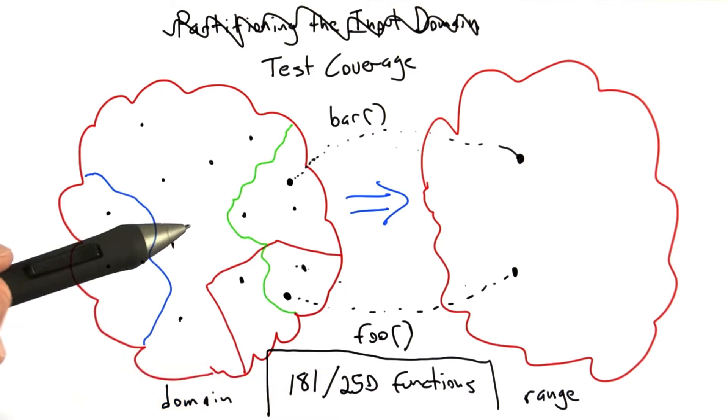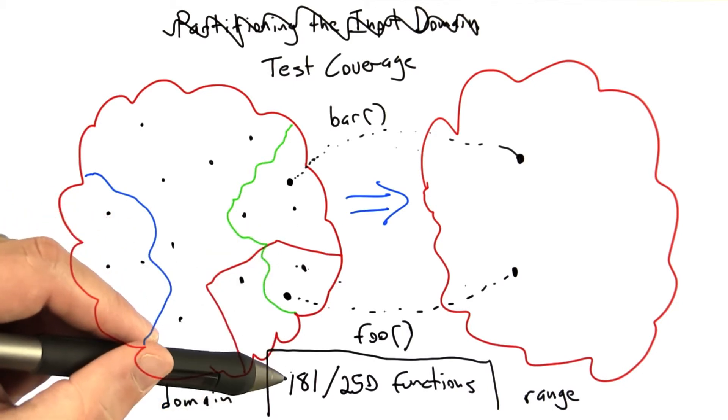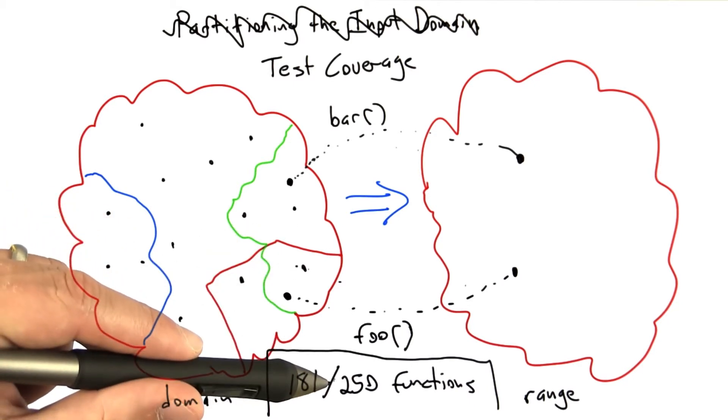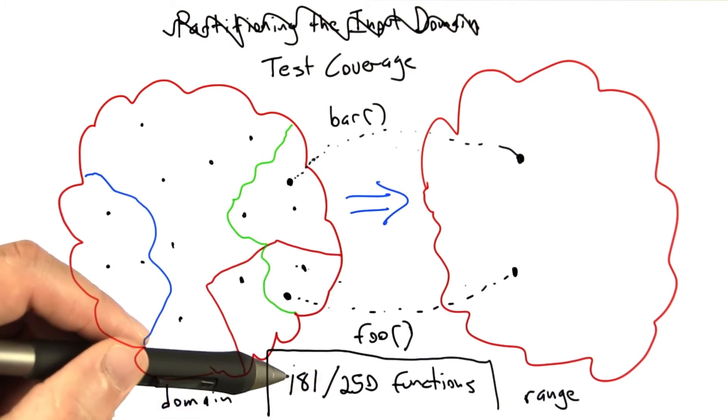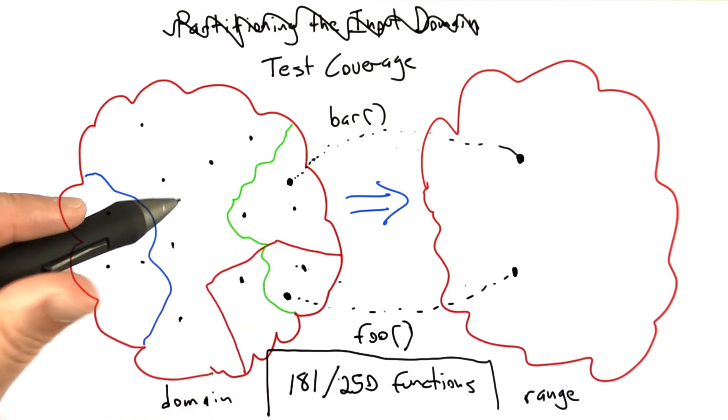And so now that we've achieved this goal that we had, which is assigning a score to a collection of test cases, the next thing we have to ask is, is this score any good? Is that good test coverage to have executed 181 out of our 250 functions? Well, in this example, it's probably not. So what we can do is, for each of the functions that wasn't covered, we can go and look at it. And we can try to come up with a test input that causes that function to execute.